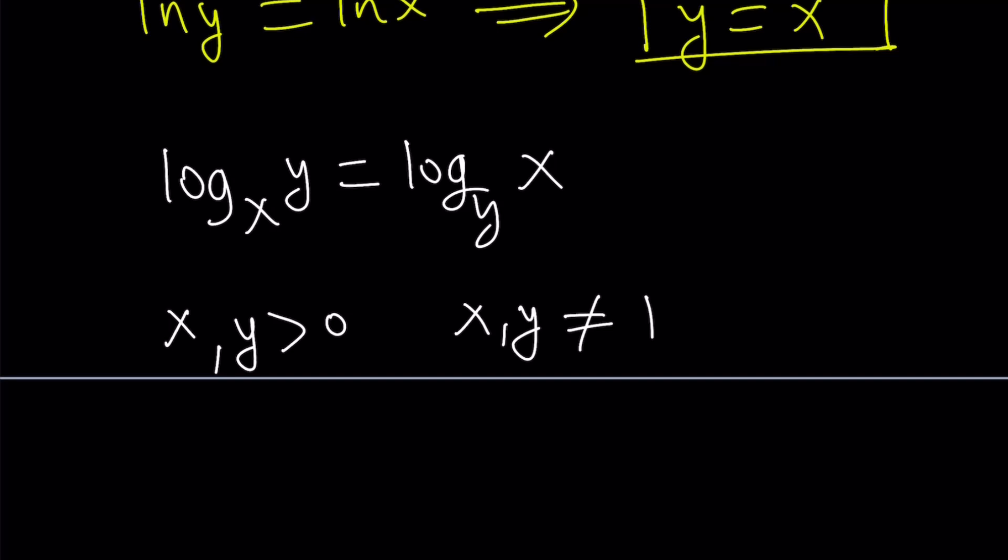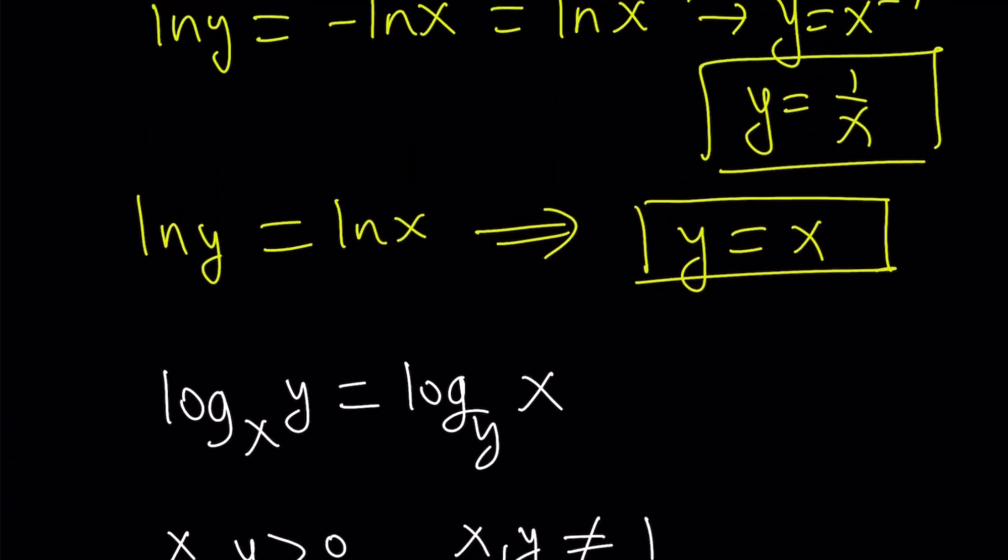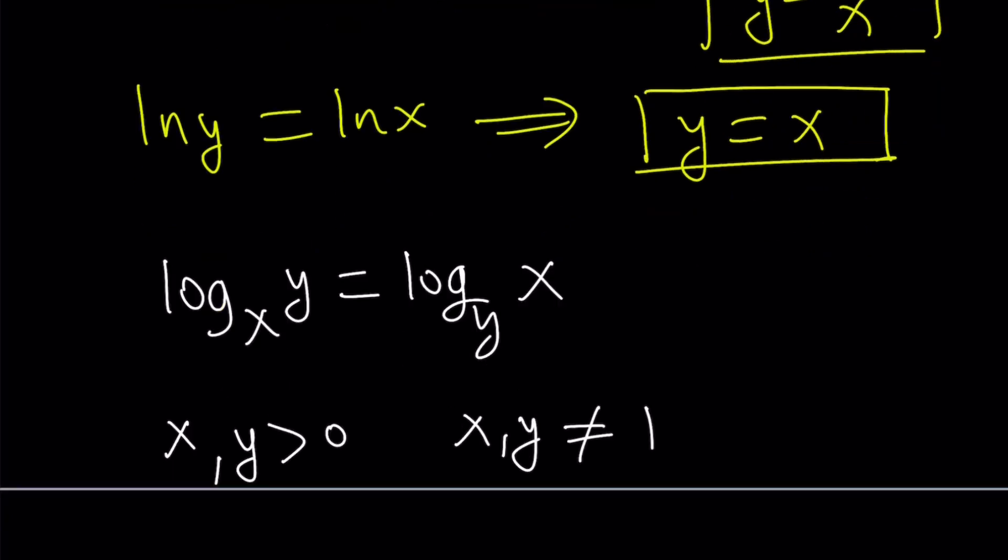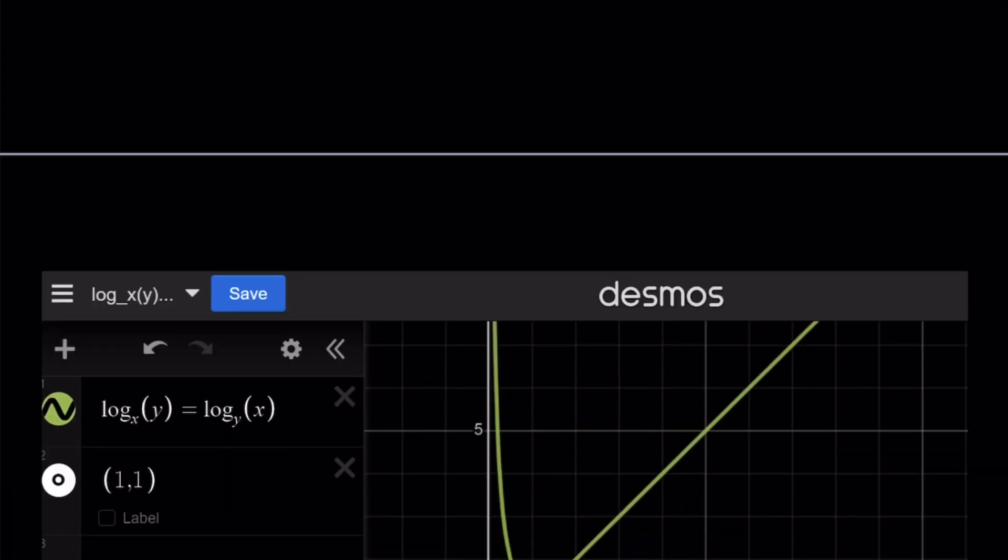So (1, 1) is not a solution, even though y equals x is a branch. You're going to see in the graph, when I show you the graph, you're going to notice that. Okay, so let's go ahead and take a look at the graph, and we'll just finish up.